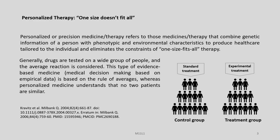Although we have medicines made to be prescribed for certain diseases, as we progress through this lecture we will come to know that certain medicines prescribed to certain patients for certain diseases may in fact cause them harm rather than cure them. In continuation of this paradigm — one size does not fit all — personalized or precision medicine or therapy refers to those medicines and therapies that combine genetic information of a person with phenotypic and environmental characteristics to produce healthcare tailored to the individual, eliminating the constraints of one-size-fits-all therapy.